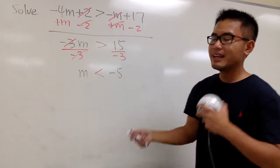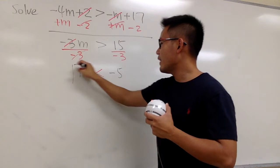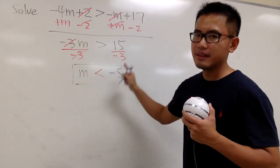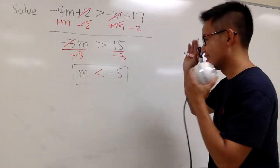So, as you can see, final answer, m is less than negative 5. That's it.